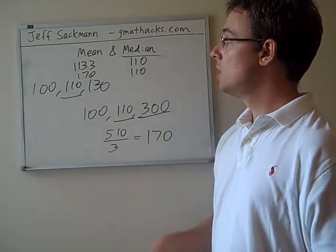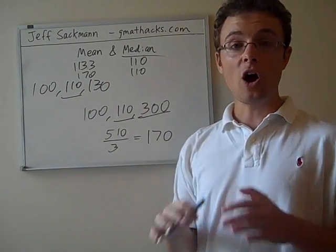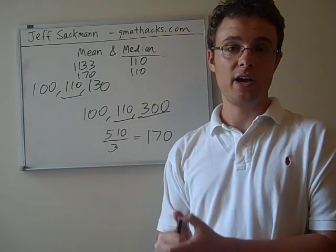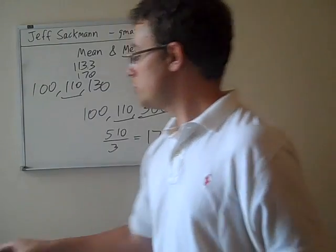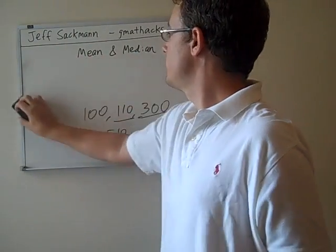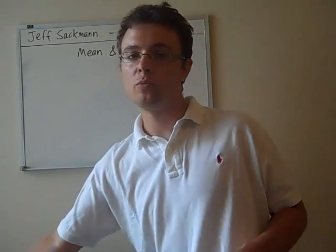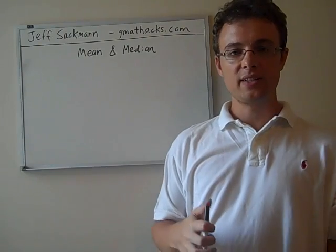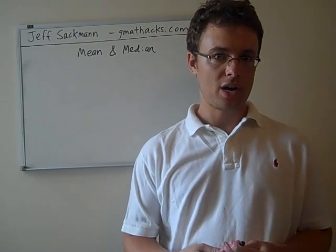Most of the time on the GMAT, we're going to be working with mean, but often they'll be asking you to compare the mean and the median. So when you are asked to compare the mean and the median, that's what you should be thinking about. How much is the set skewed on the bottom? How much is it skewed on the top?